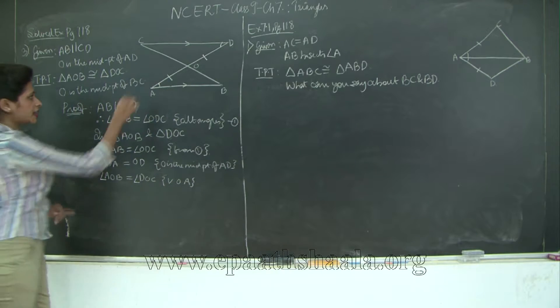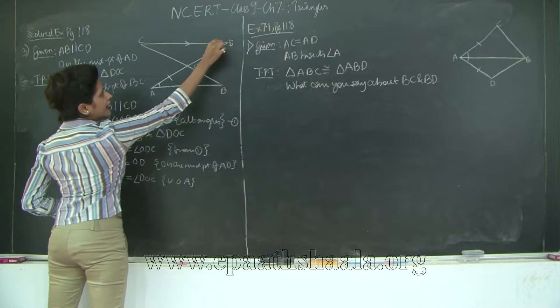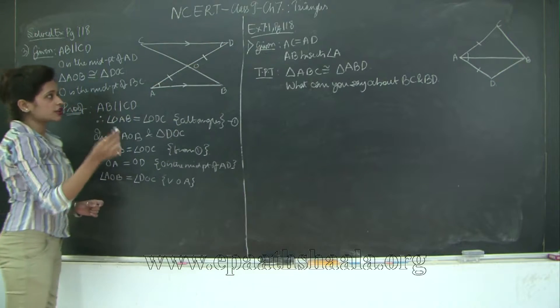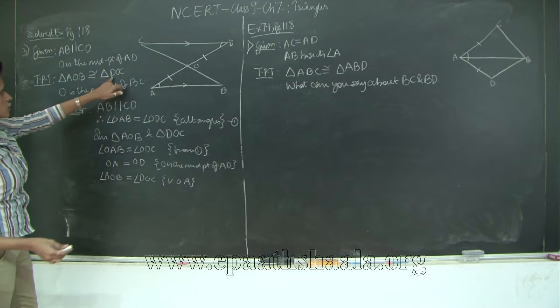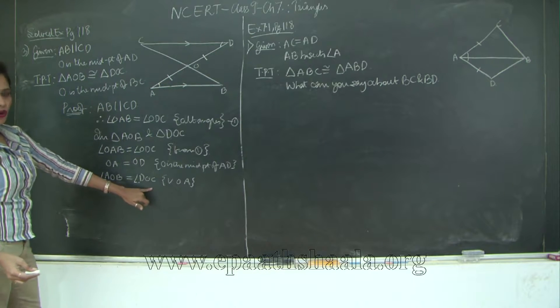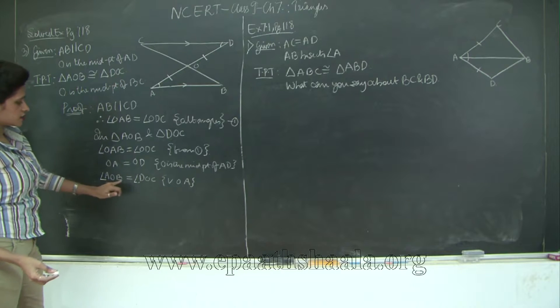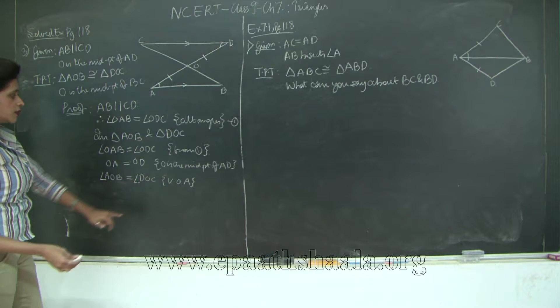See the order in which I am taking. I am taking AOB and DOC. So the corresponding vertices are very important. A corresponds to D. Then O corresponds to O obviously and B corresponds to C. So see the sequence.